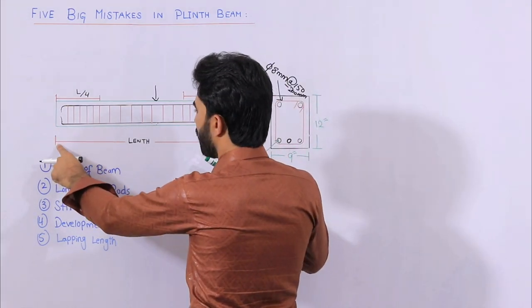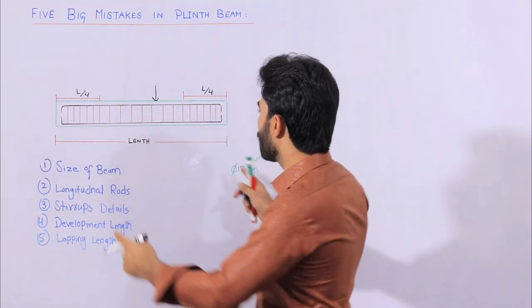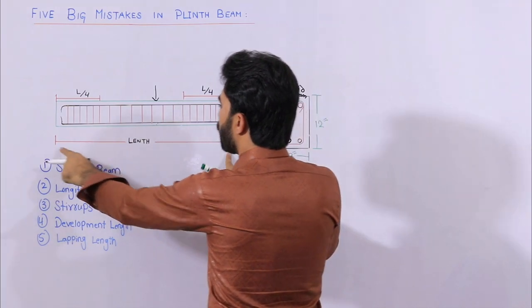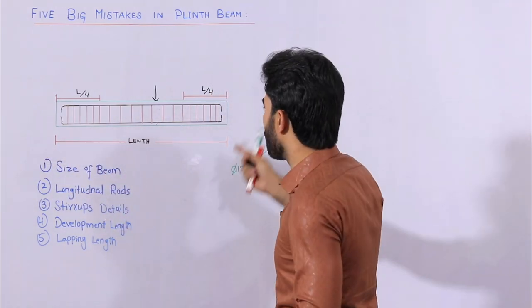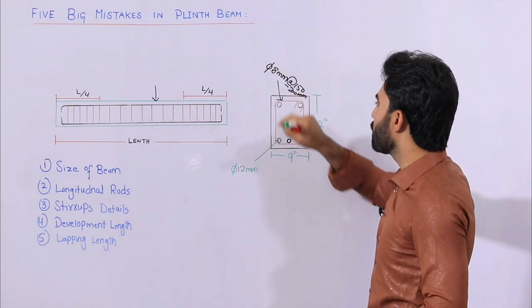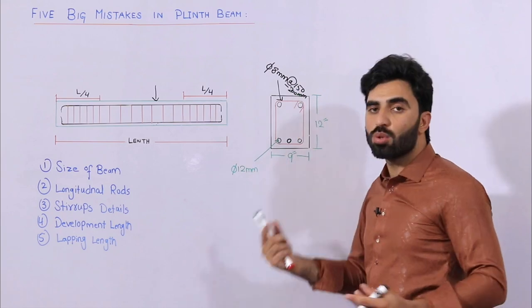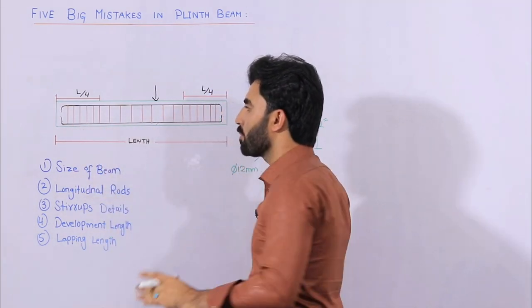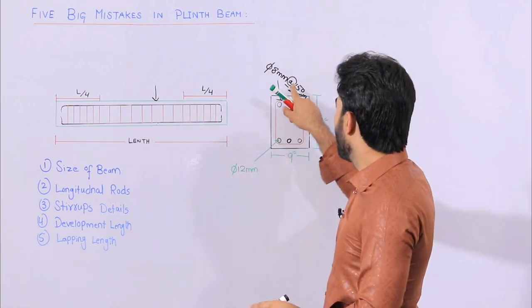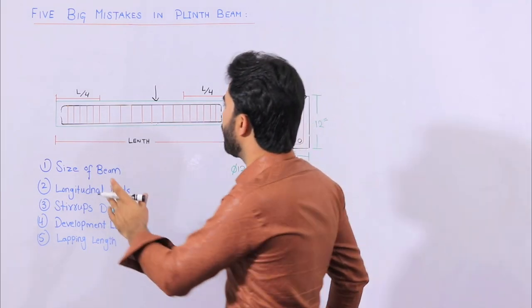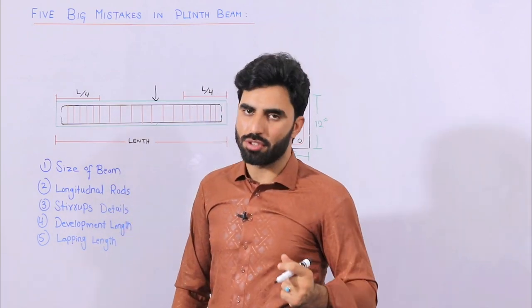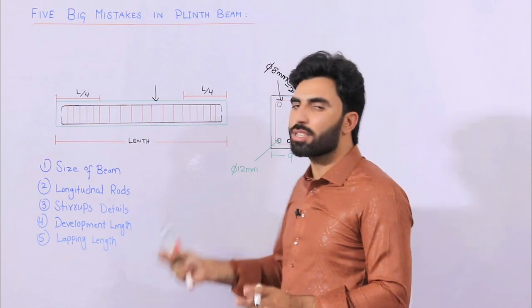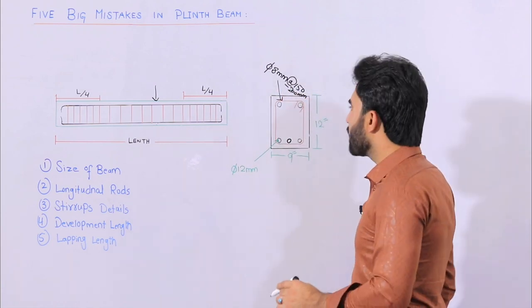You can see this is the total length from start to finish between two columns — this is the clear span for this beam. We have L/4 at each end, meaning the total length divided by 4. At the L/4 zone we have negative bending moment. At this L/4 distance, the stirrups should be provided closely — up to 150 mm or 6 inches spacing. After L/4, you can increase the spacing up to 7 to 8 inches. But at the end supports, at L/4, don't provide maximum spacing.